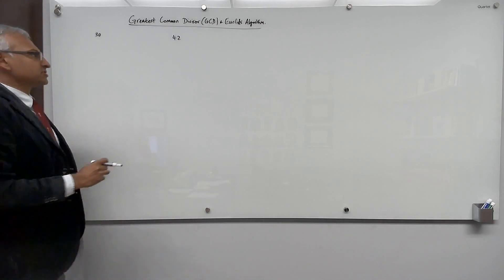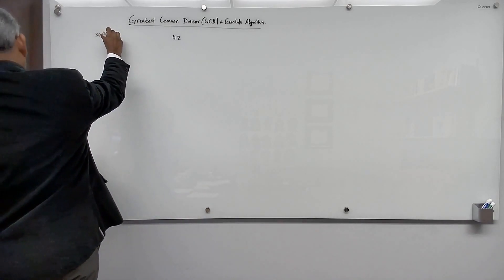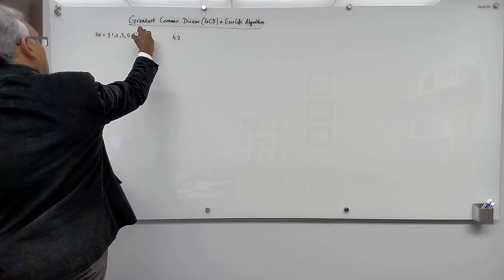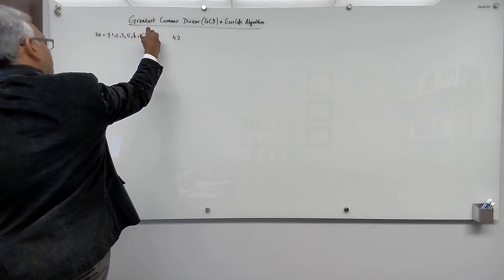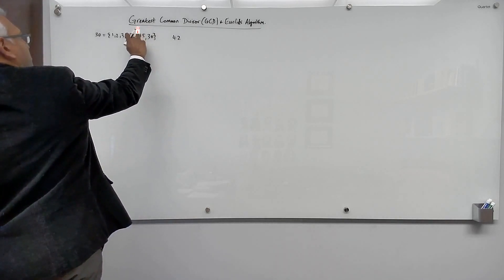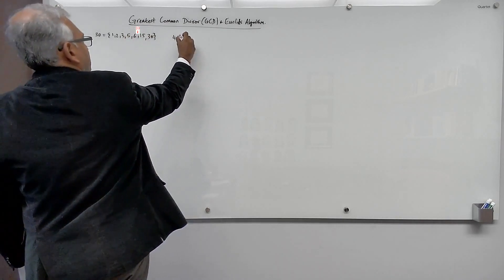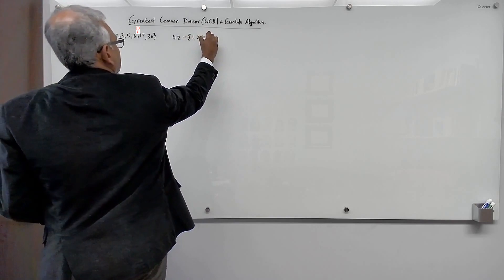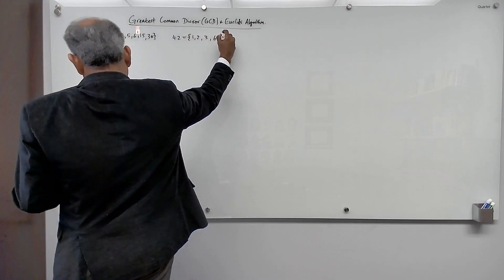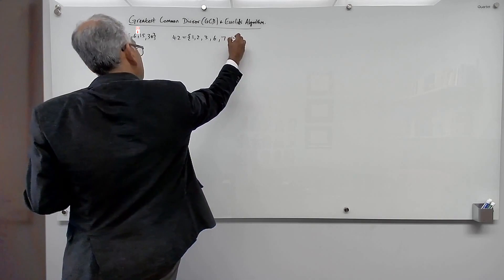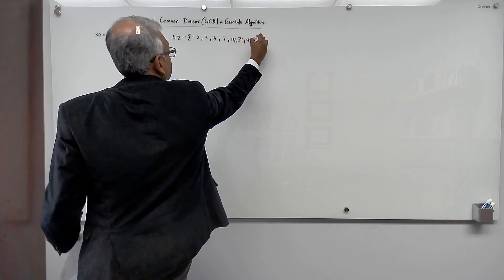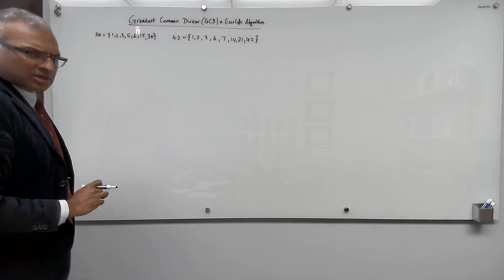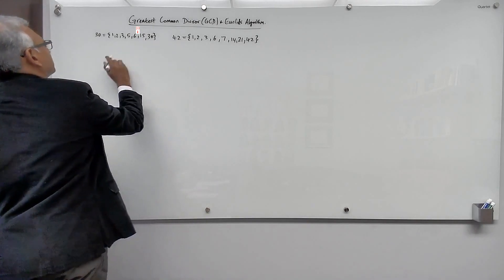Let's look at the divisors of both of these numbers. The divisors of 30 are 1, 2, 3, 5, 6, 15, and 30. These are the divisors of 30. Correspondingly, let's look at the divisors of 42. 42 has the divisors 1, 2, 3, 6, 7, 14, 21, and 42.